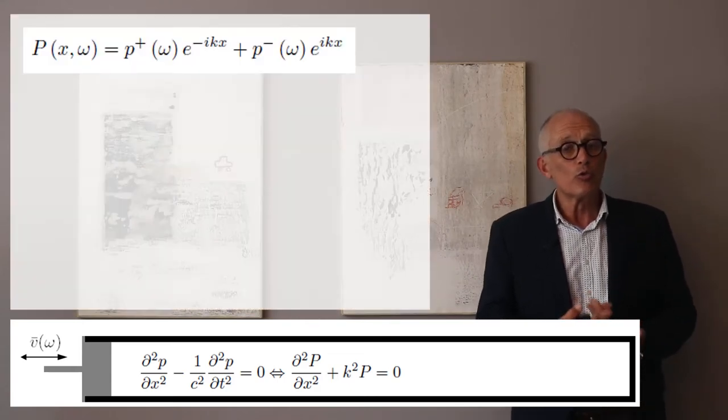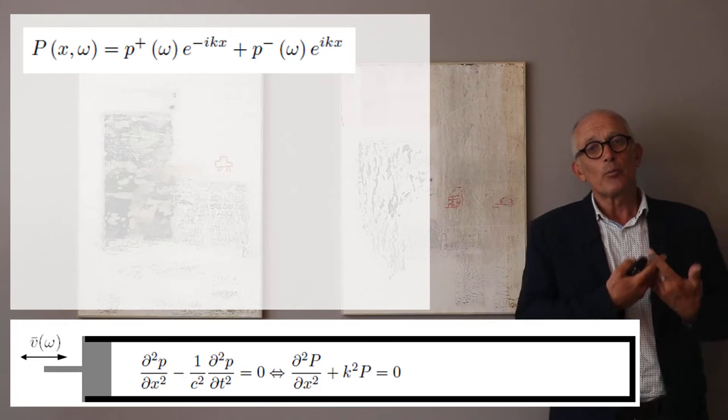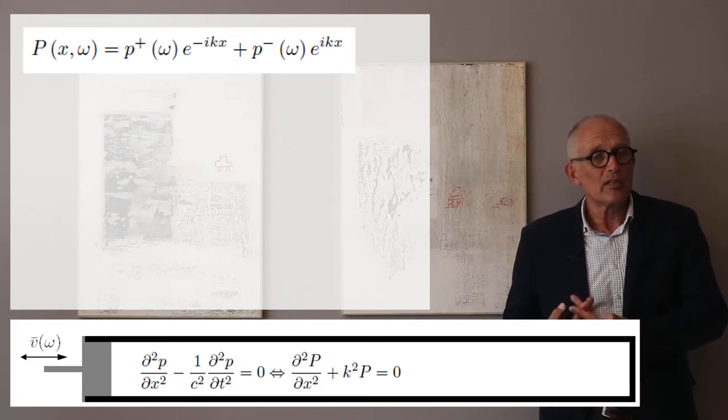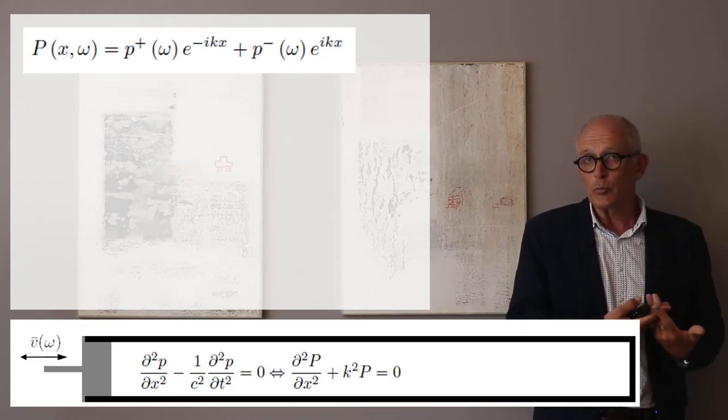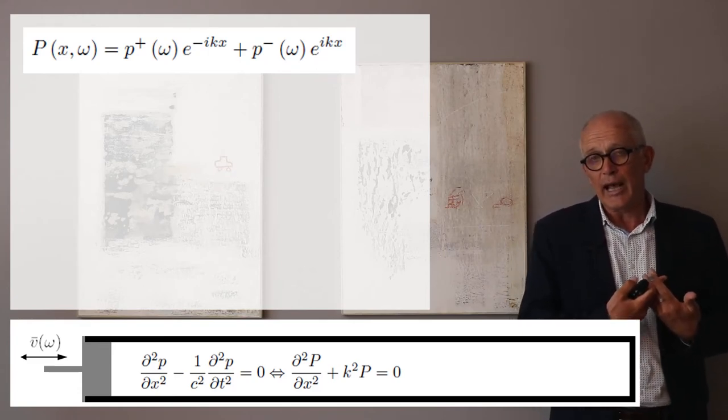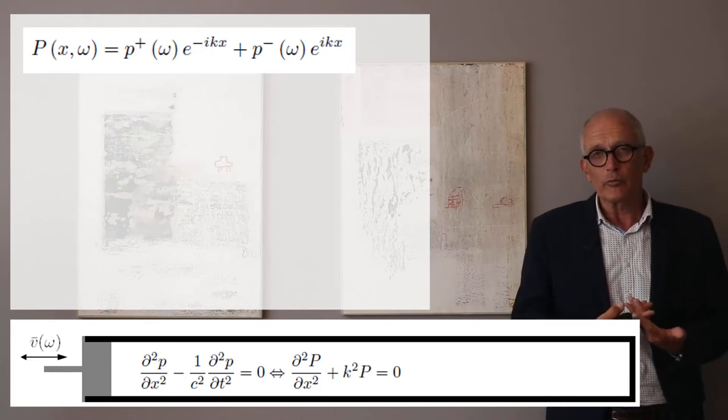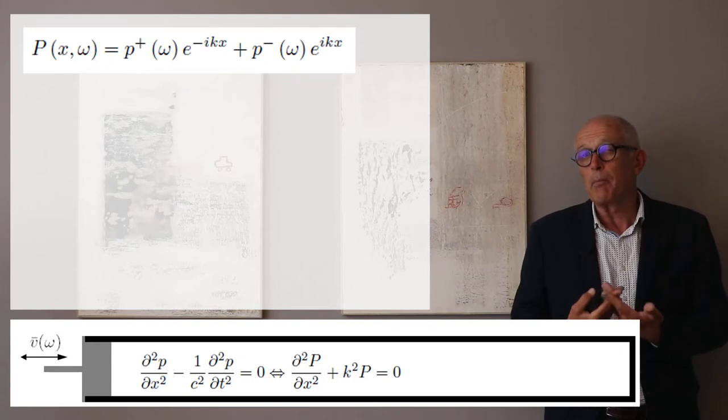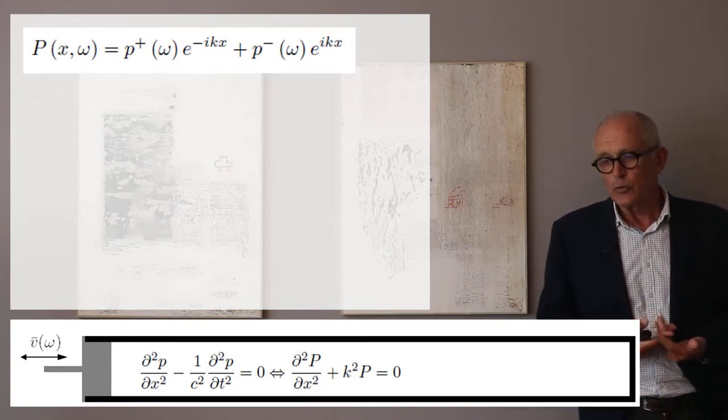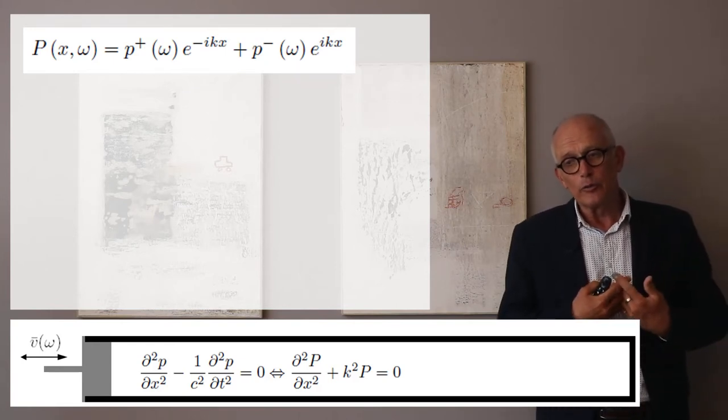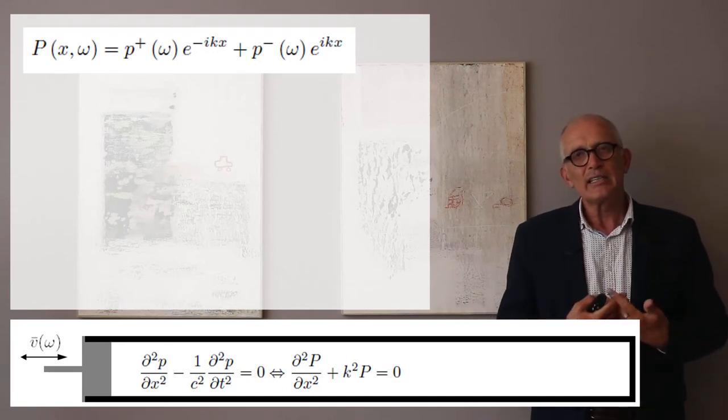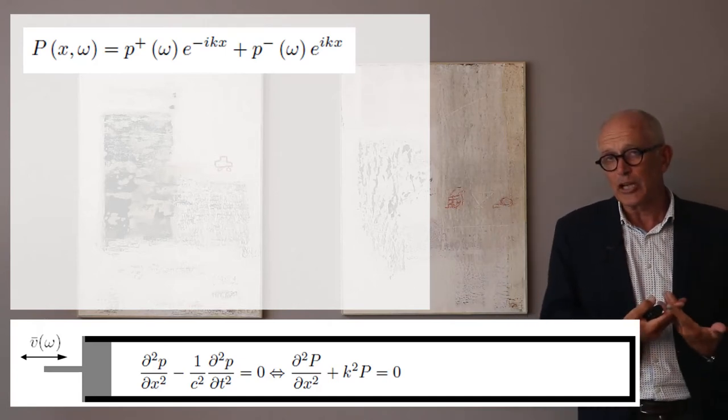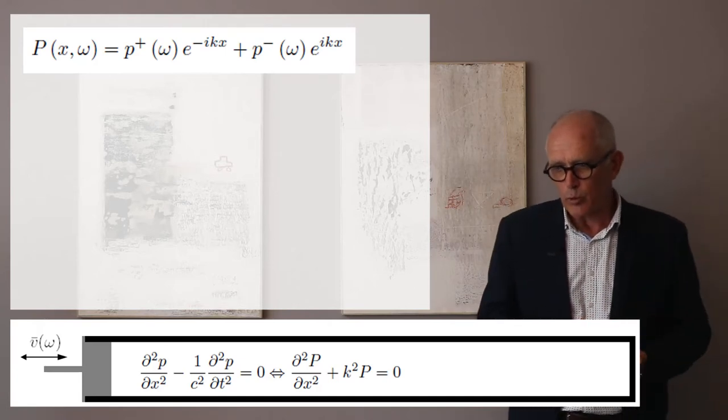I know the general solution is a pressure field where I have a forward propagating wave and a backward propagating wave. The forward propagating wave has an amplitude p plus that only depends on frequency, with space dependency in exponential minus ikx for the forward propagating wave and exponential ikx for the backward propagating wave.